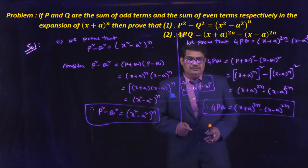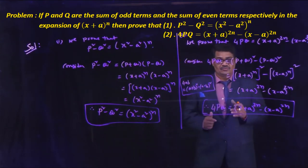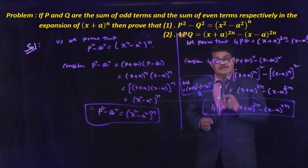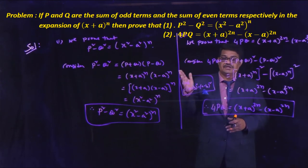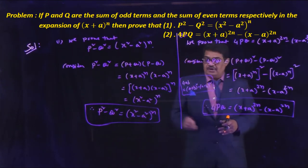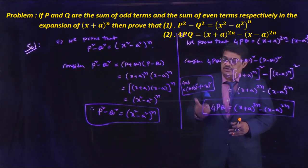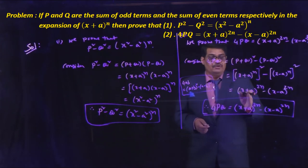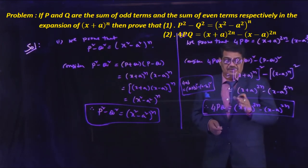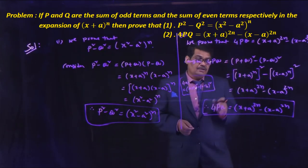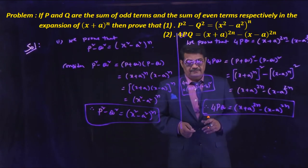So P and Q are the sum of the odd terms and even terms respectively in the expansion of (x+a)^n. We have proved P² - Q² = (x² - a²)^n and 4PQ = (x+a)^(2n) - (x-a)^(2n).